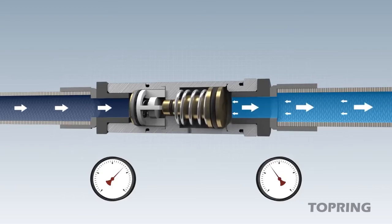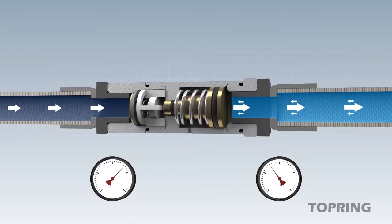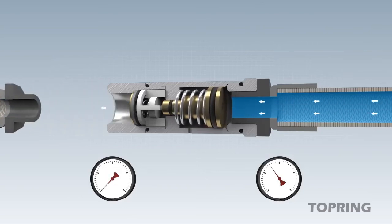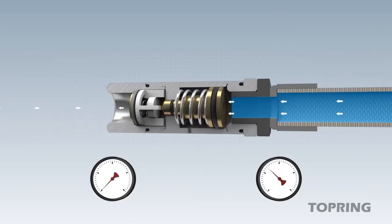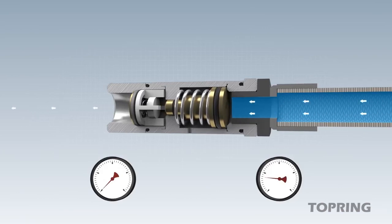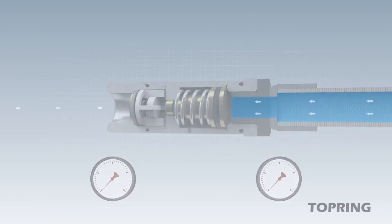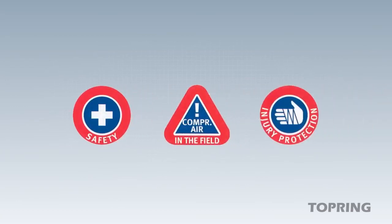A special feature is the venting on the output side. When the supply pressure is switched off, the inline pressure regulator Tool Reg vents automatically to avoid possible work accidents, for example with nailers. The venting function minimizes the accident risk significantly.